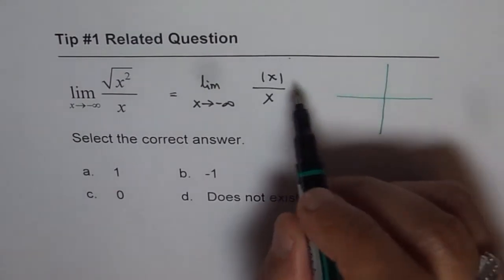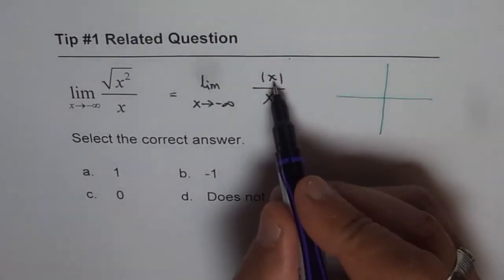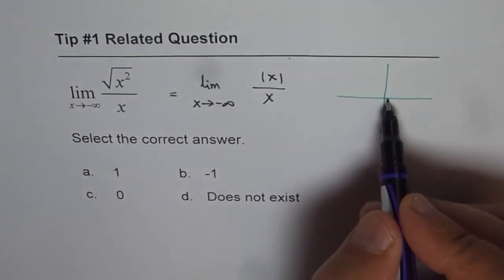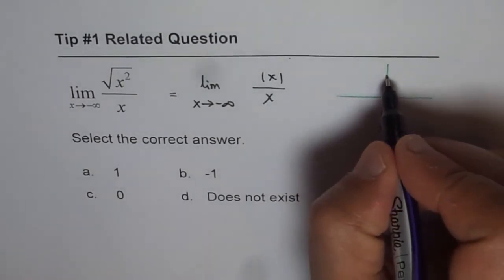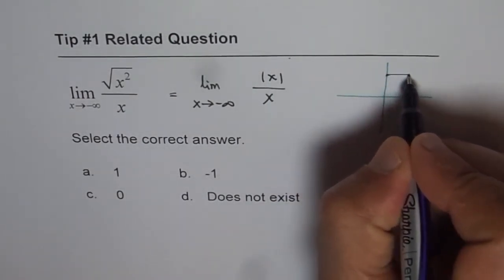So it will be x over x when x is greater than or equal to 0. So we can say the function will be kind of like this here.